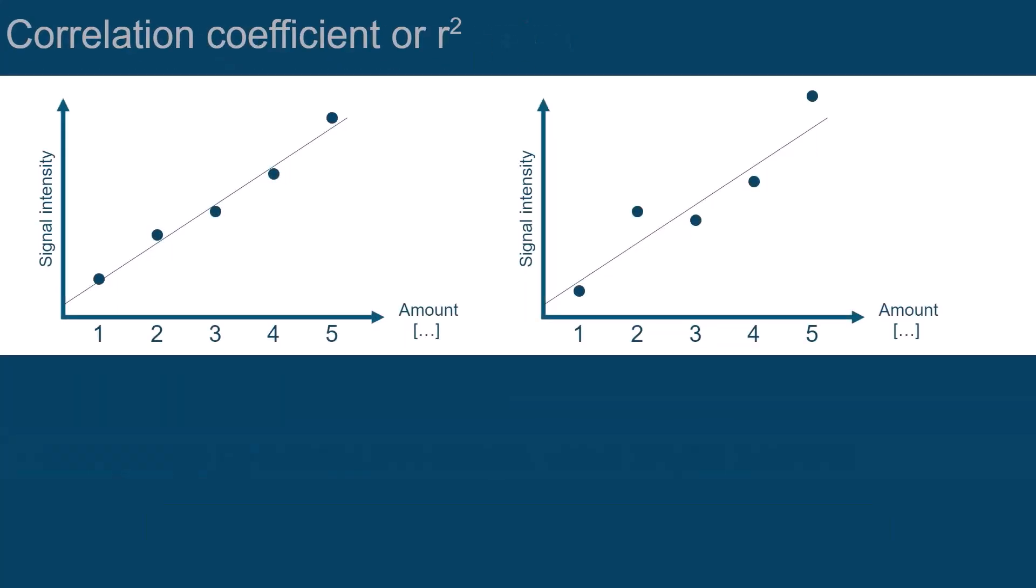Let's have a closer look into these calibration curves. The one on the left has low deviation in the signal intensities, whereas the one on the right shows a high deviation. Everyone may agree that the left curve can be considered as good, and the right one is bad.